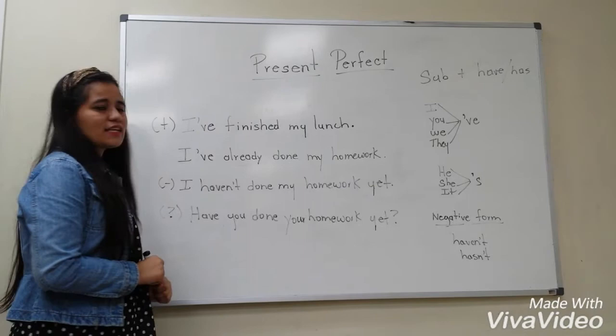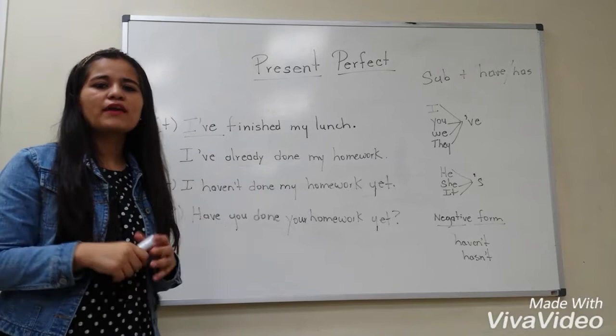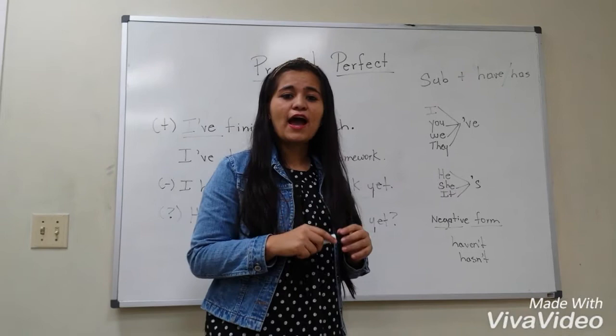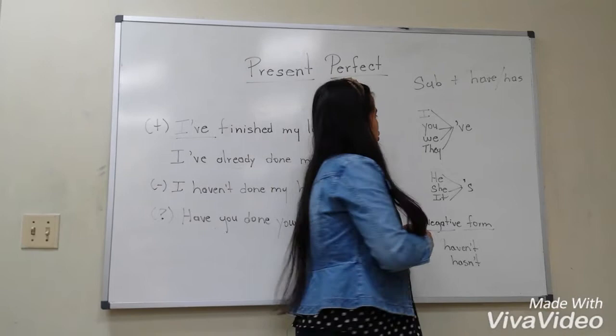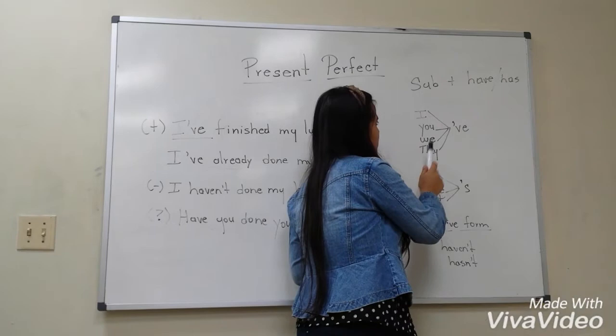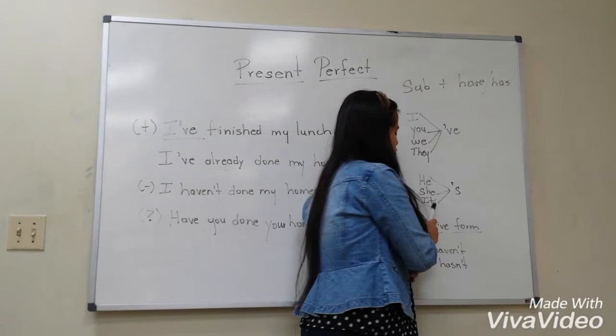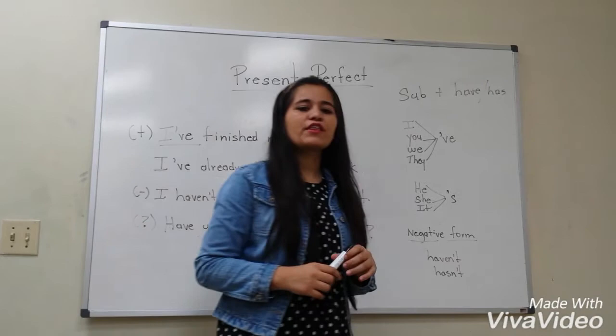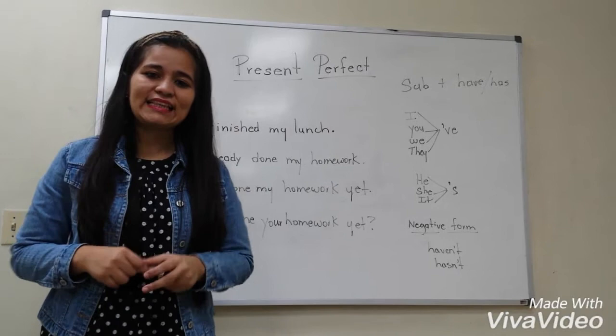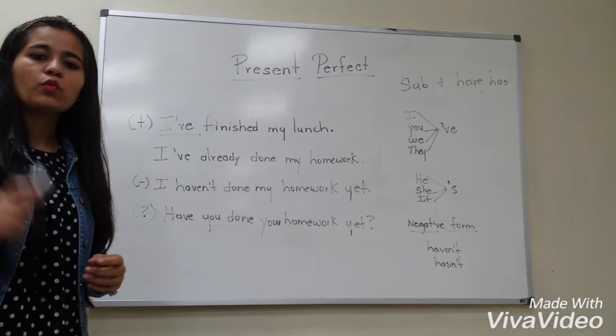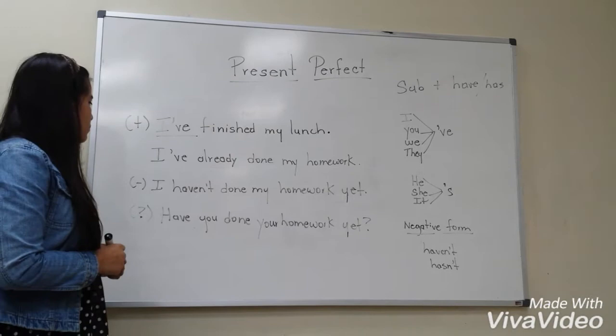What is the structure of the present perfect? We use contractions. Over here we have the contractions using the pronouns. For example: I plus have gives I've; you plus have gives you've; we plus have gives we've; they plus have gives they've. And for the third person: he plus has gives he's; she plus has gives she's; it plus has gives it's. For the negative form: haven't and hasn't for the third person. We also use already and yet in present perfect sentences. We only use already in affirmative sentences. For example: I've already done my homework.